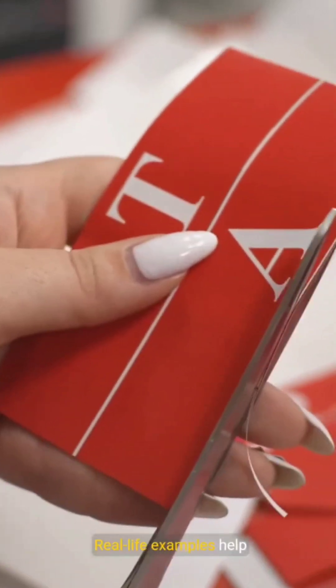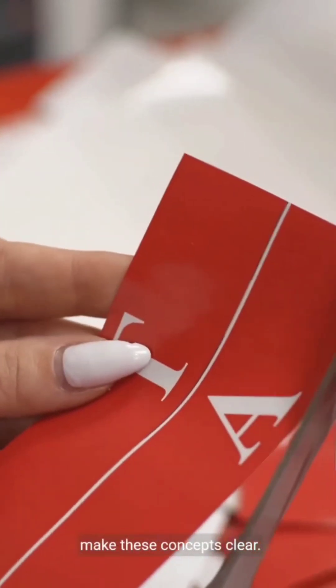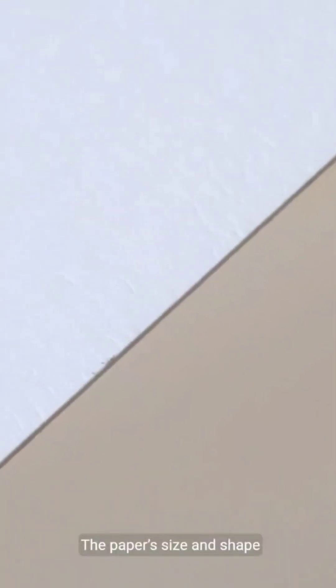Real-life examples help make these concepts clear. Imagine cutting a piece of paper. The paper's size and shape change, but it's still paper. This is a physical change.